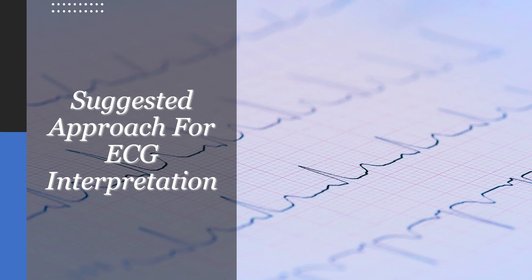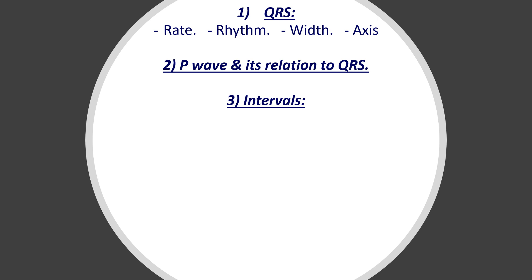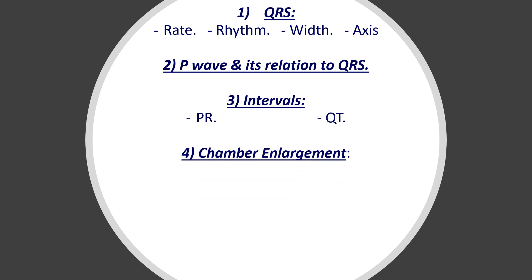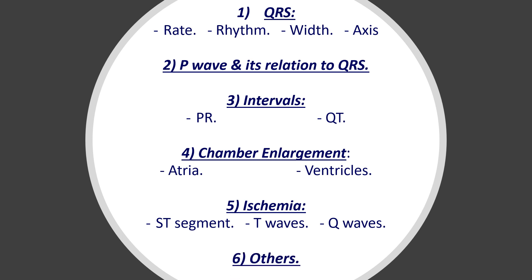The suggested approach is this: start with looking at the QRS complex and ask yourself four questions — what's the rate, what's the rhythm, what's the width, and what's the axis? Then check the P waves and their relation to the complex. Then check the two important intervals: the PR interval and the QT interval. Then look at chamber enlargement — both atria and both ventricles. Then check for ischemia: the ST segment, T wave, and Q waves. And then check for anything else.